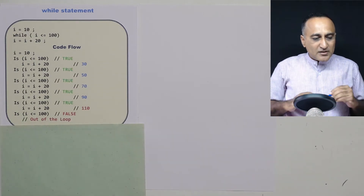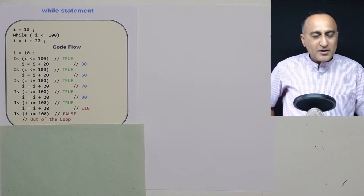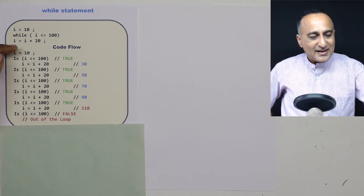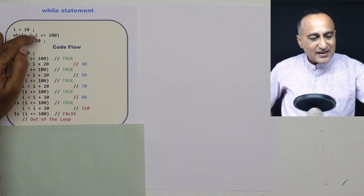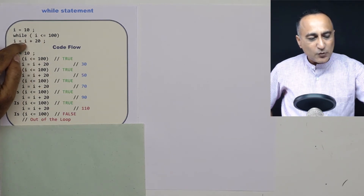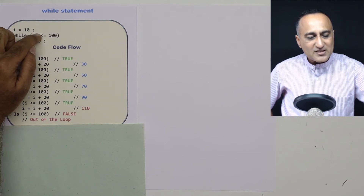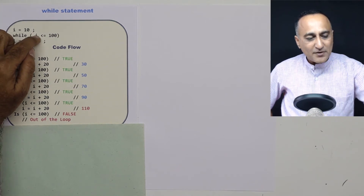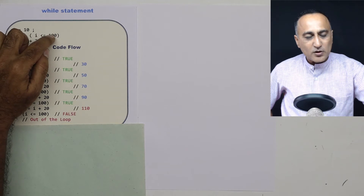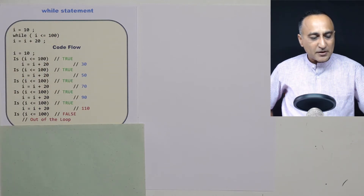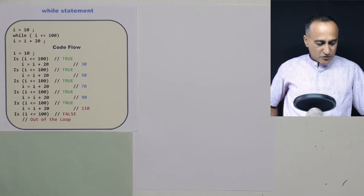So this should give you a clear idea of what a loop is. It will test the condition first, then do the increase. Again it will test the condition, do the increase. As long as the value of i is less than or equal to 100, it will keep repeating that particular process.